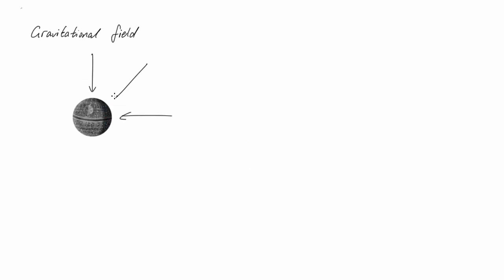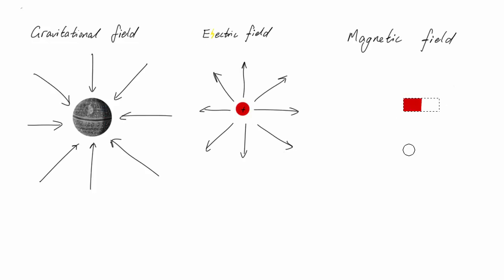Field lines can be used to represent some types of vector fields: gravitational fields, electric fields, and magnetic fields, just to name a few.